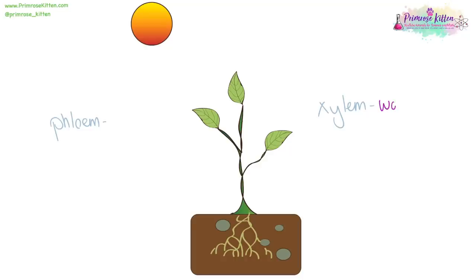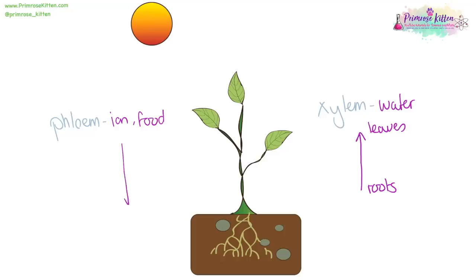The xylem is going to carry water generally in an upwards direction from the roots, where it is collected, to the leaves where it can be used for photosynthesis. And the phloem carries ions and food, generally in a downwards direction — from the leaf where food can be made in photosynthesis, to the roots where it can be stored, for example in potatoes.